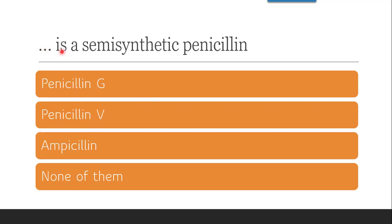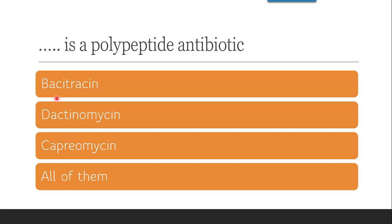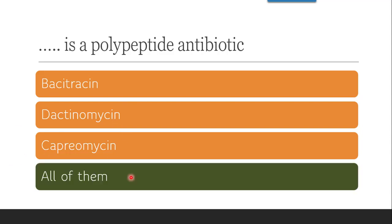The next question is: which is a semi-synthetic penicillin — penicillin G, penicillin V, ampicillin, or none of them? The correct answer is ampicillin, which is a semi-synthetic penicillin. The next question is: which is a polypeptide antibiotic — bacitracin, dactinomycin, capreomycin, or all of them? The polypeptide antibiotics include bacitracin, dactinomycin, capreomycin, viomycin, etc. So the correct answer is all of them.